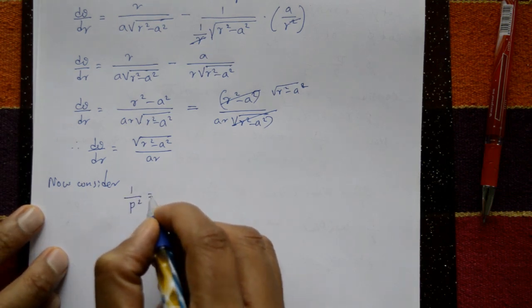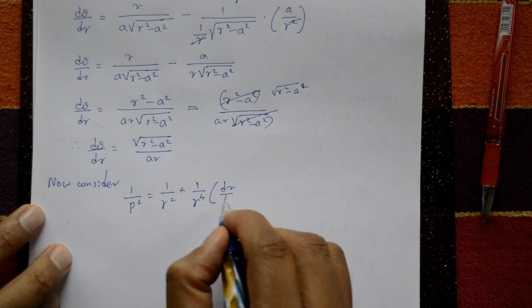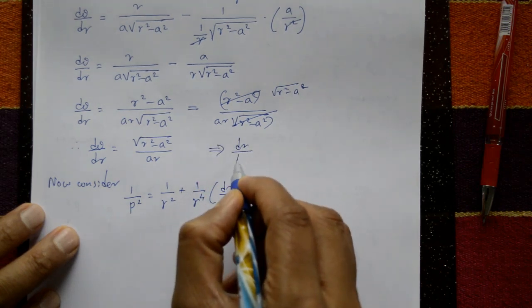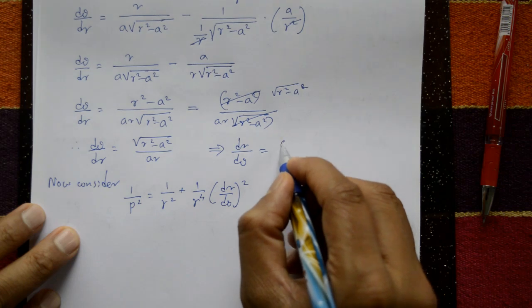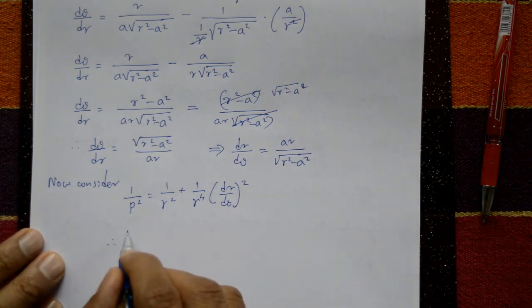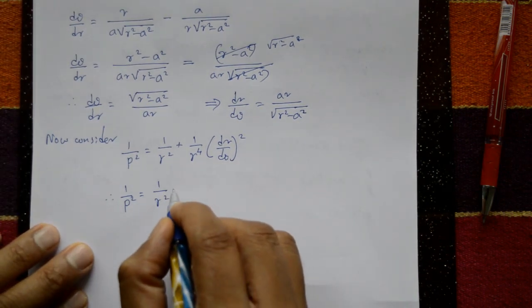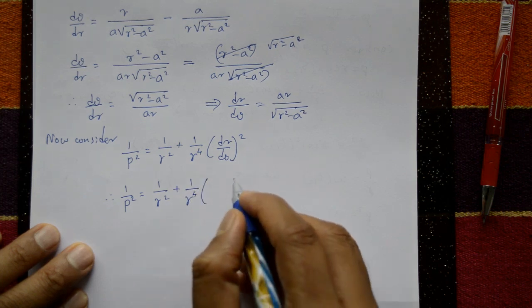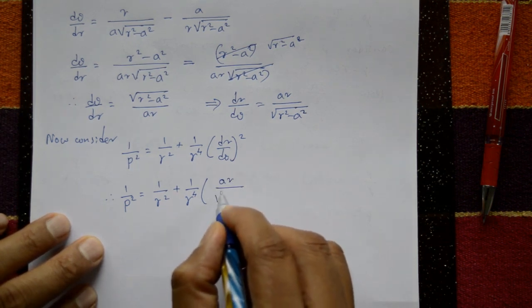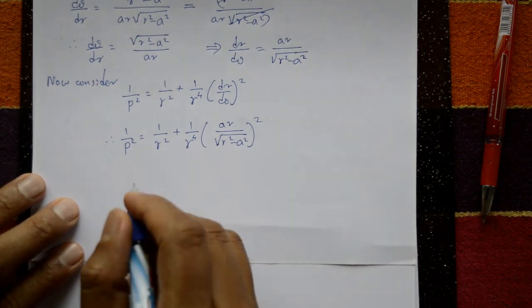Now consider the pedal formula: 1/p² = 1/r² + (1/r⁴)·(dr/dθ)². We need dr/dθ, which is the reciprocal of dθ/dr. So dr/dθ = a·r / √(r² - a²). Therefore 1/p² = 1/r² + (1/r⁴)·[a·r/√(r² - a²)]².